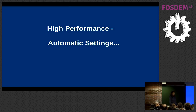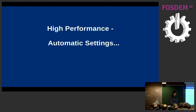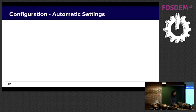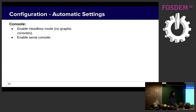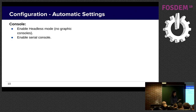Now let's drill down into the list of automatic settings for high performance VMs. Everything I describe now is automatically set for you and should increase VM performance. In the console area: we enable headless mode and in addition enable serial console. Headless mode means there is no graphic console at all, but you still have the serial console to manage the VM remotely if needed.